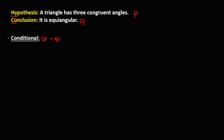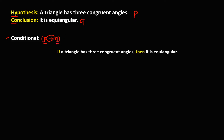For a conditional statement, we have the implication: P — if a triangle has three congruent angles — then Q — it is equiangular. So this is now the conditional statement.